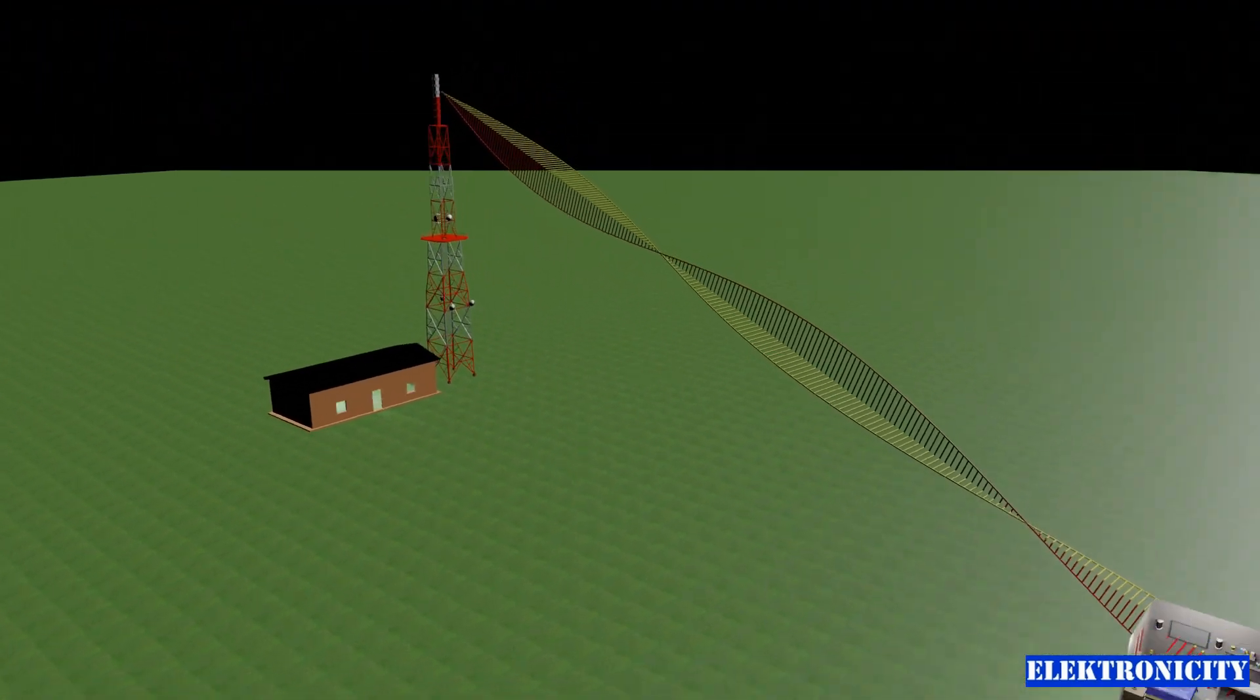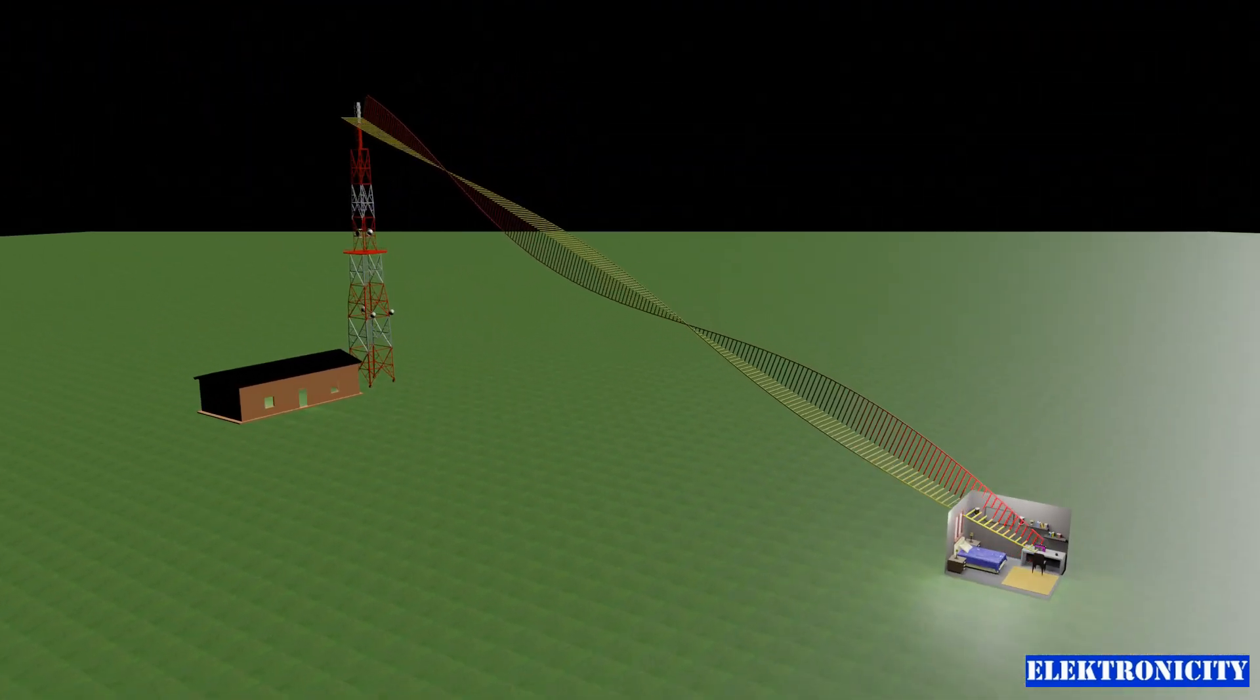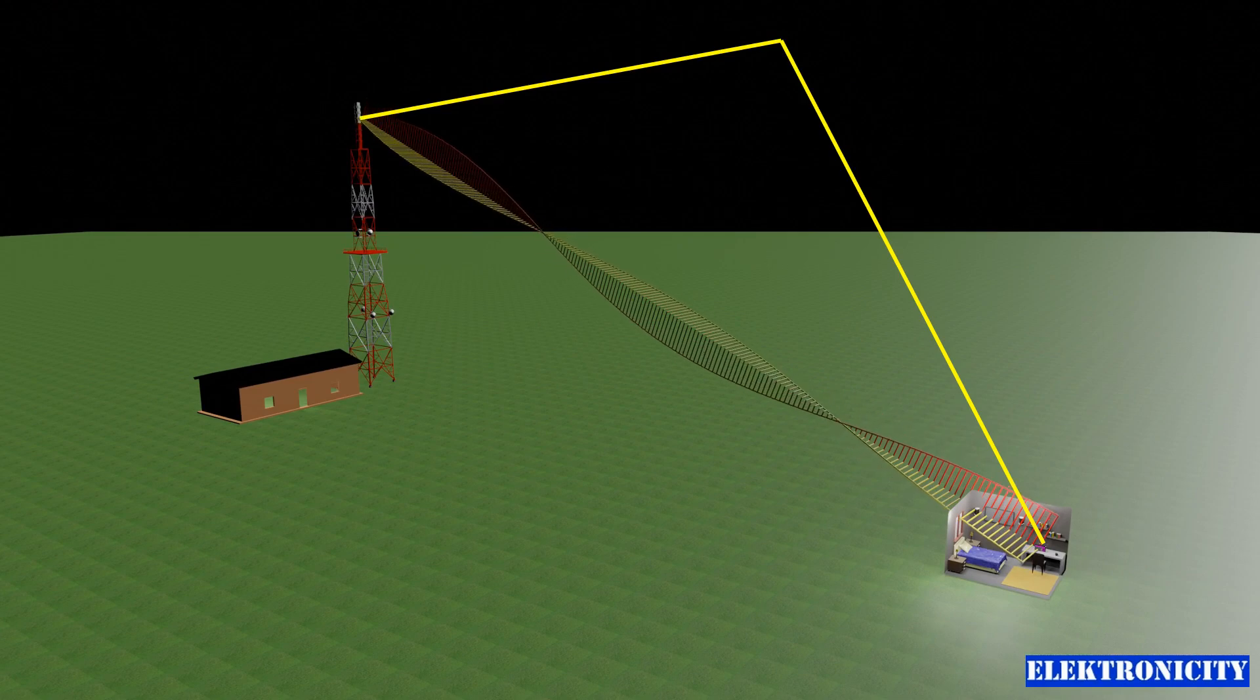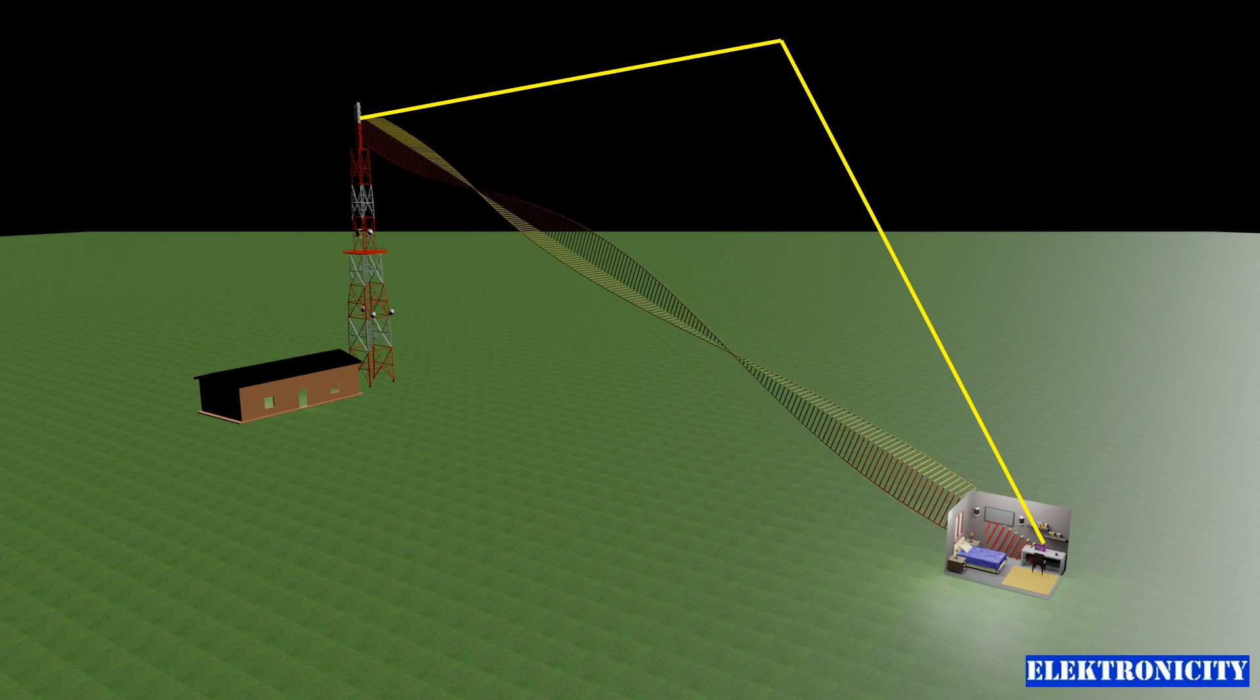These electromagnetic waves can travel long distances, bouncing off the ionosphere especially at night, allowing AM signals to be received far from the original transmission site.